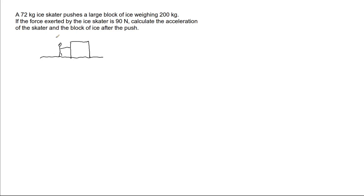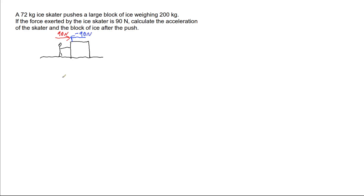The ice skater is pushing on that block with a force of 90 newtons. If we define that as our positive direction, the block — because of Newton's third law, that every force has an equal and opposite reaction — is pushing back on the ice skater with a force of negative 90 newtons in the opposite direction. After this push, the ice skater is going to go one way and the block of ice is going to go the other, because they've got no grip.